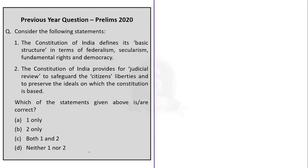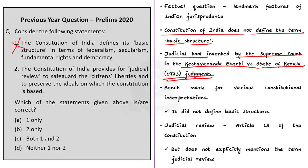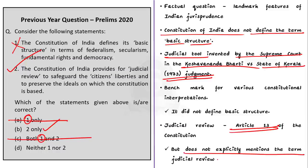The options are: A — 1 only, B — 2 only, C — both 1 and 2, D — neither 1 nor 2. The first statement is wrong. The Constitution of India does not define the term 'basic structure.' The basic structure is a judicial tool invented by the Supreme Court in the Keshavananda Bharati vs State of Kerala judgment — it is not mentioned in the Constitution. So we can eliminate options A and C. The second statement is correct. Article 13 of the Constitution provides for judicial review. Though not explicitly mentioned, Article 13 deals with judicial review. So the answer is B, 2 only.